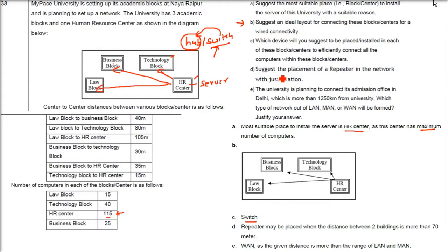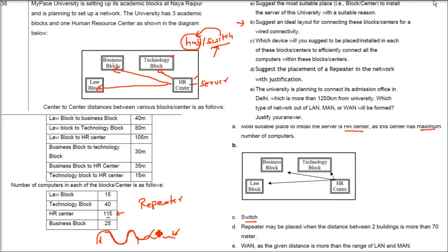The fourth question is about repeater placement. A repeater amplifies the signal to combat attenuation over long distances. You need to place a repeater at regular intervals so the signal maintains the same energy, amplitude, and frequency. If two buildings are more than 70 meters apart, a repeater must be installed between them.